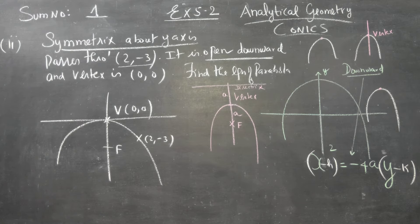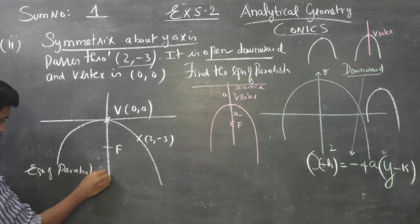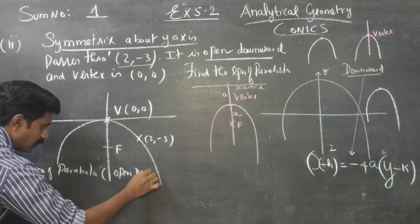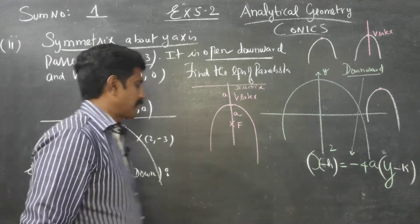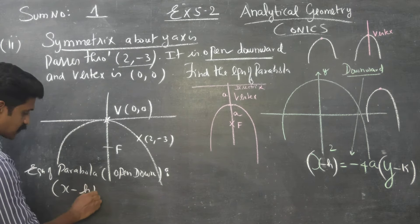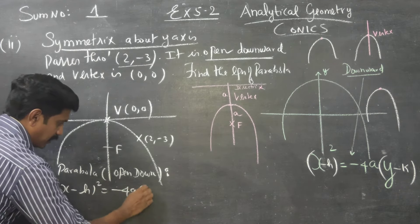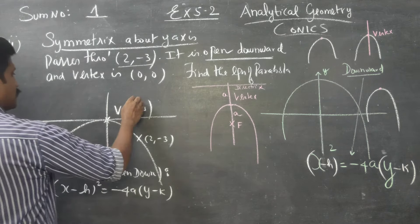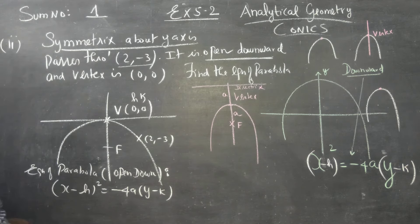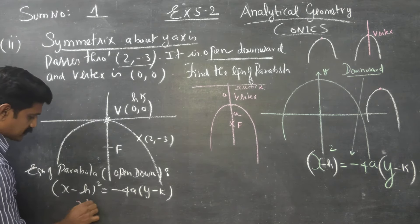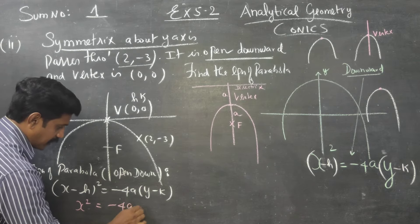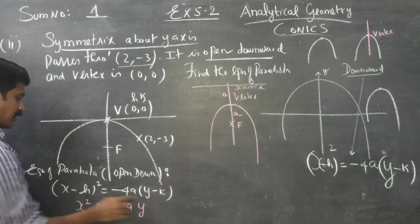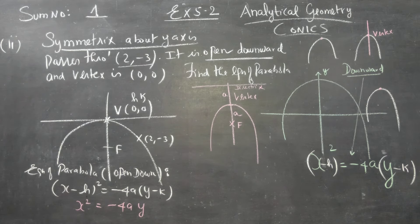We will start with the equation of the parabola. Since it is open downward, the formula is (x minus h) squared equals minus 4a into (y minus k). Our vertex is (0, 0), so h and k are both 0. Substituting, the equation becomes: x squared equals minus 4a times y.